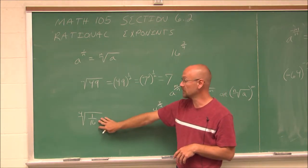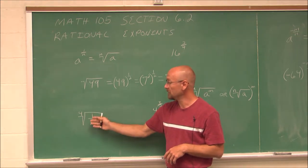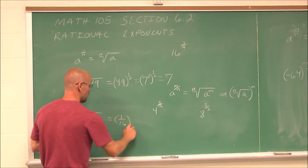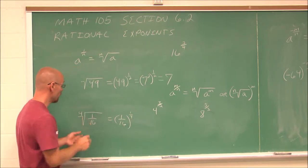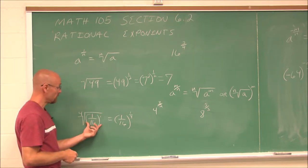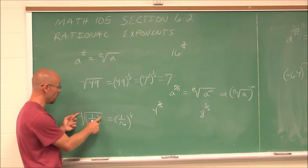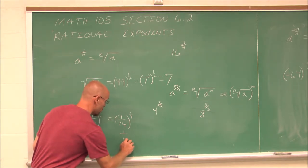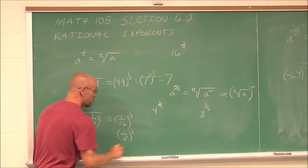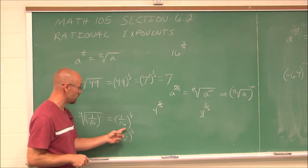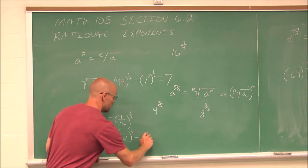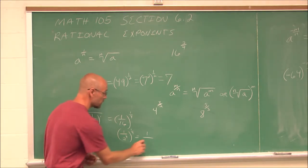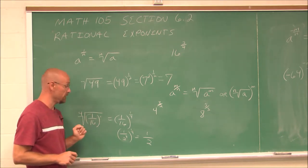What if we had the fraction 1/16 as the radicand of a radical with an index of 4? I can rewrite this as 1/16 raised to the 1/4 power, where 16 is 2 to the 4th power. If I know my rules of exponents, I can distribute the 1/4 to all the powers. 1 to any power is just 1, and 1/4 times 4 gives 2 to the 1st, which is just 2. So the 4th root of 1/16 is 1/2.